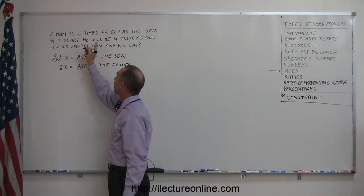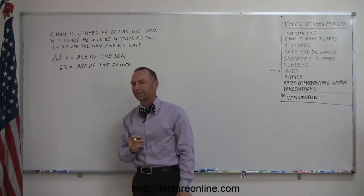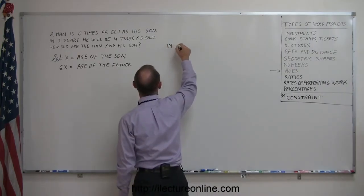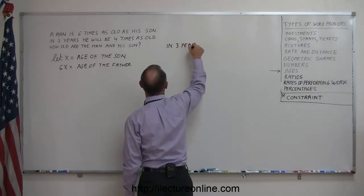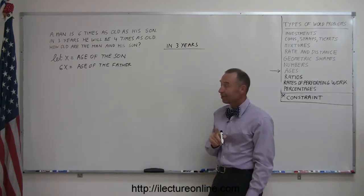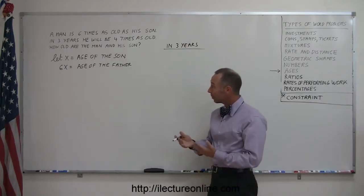It says in three years, he will be four times as old as the son. Okay, then we want to express their ages in three years in terms of x. So if x is the age of the son today, then in three years he'll be three years older.